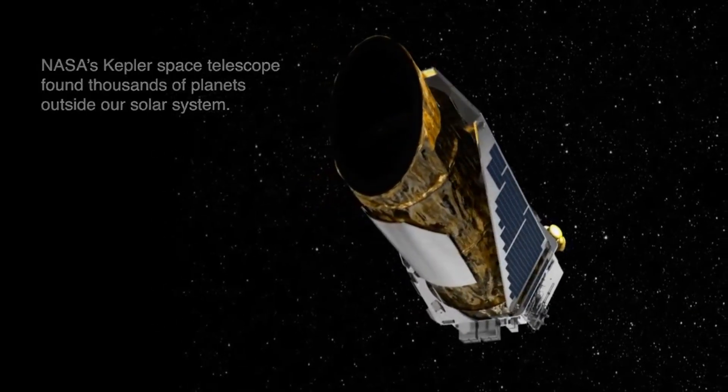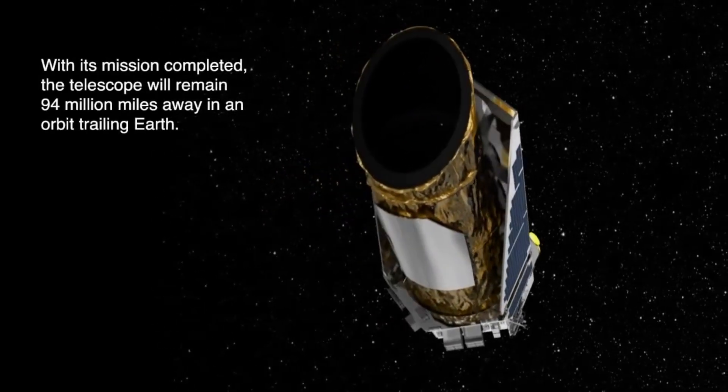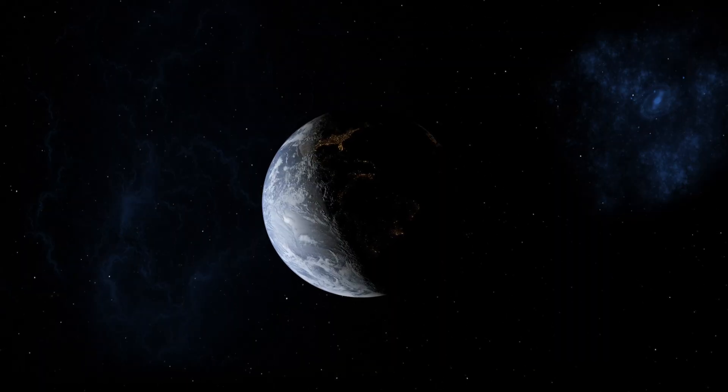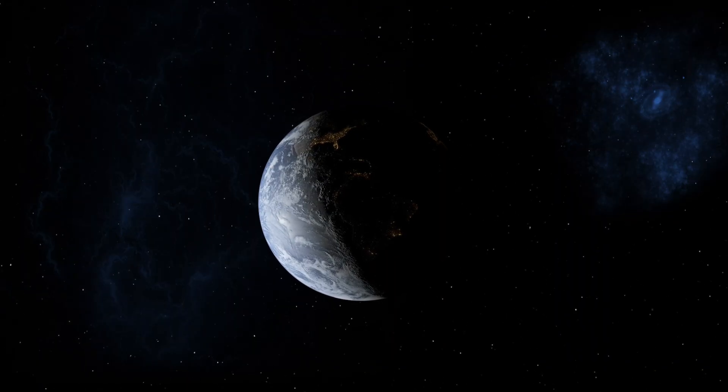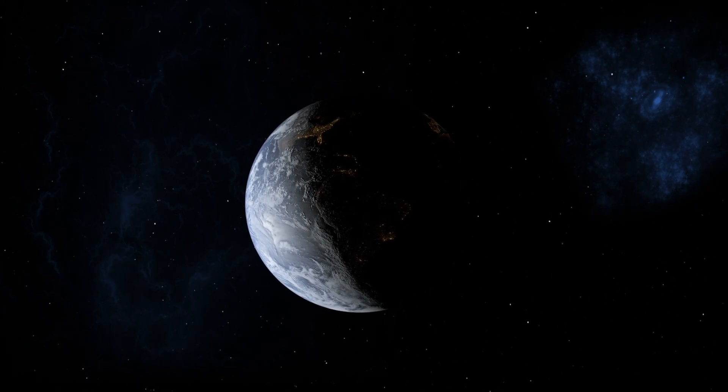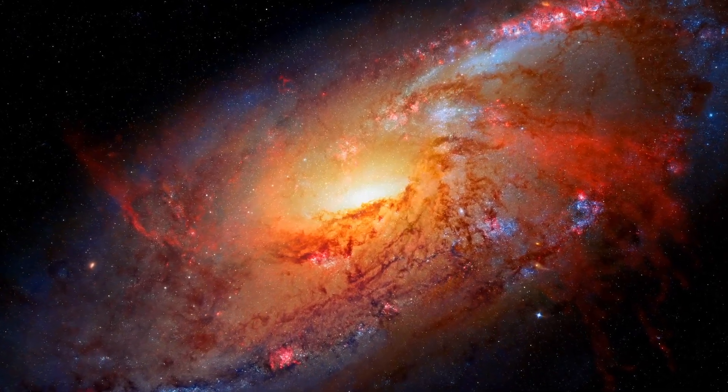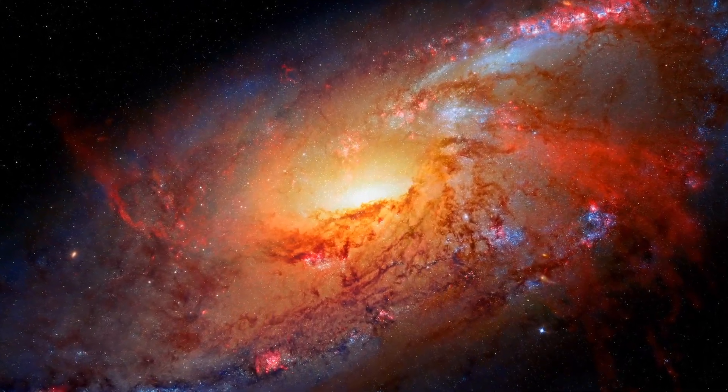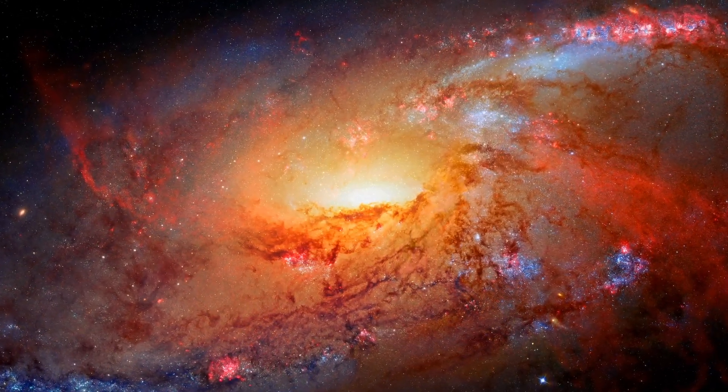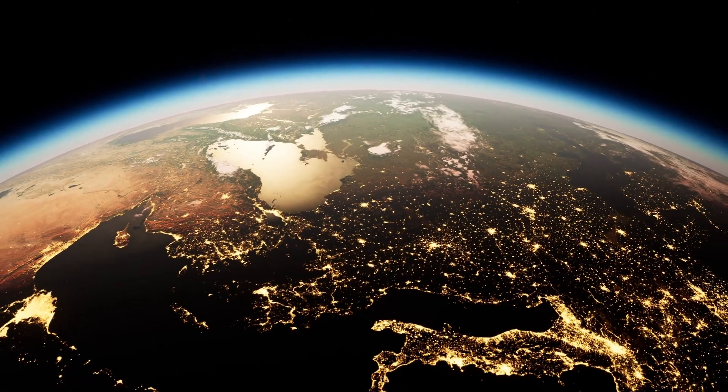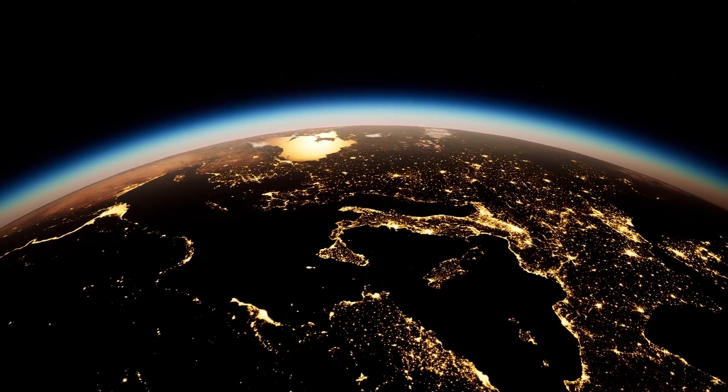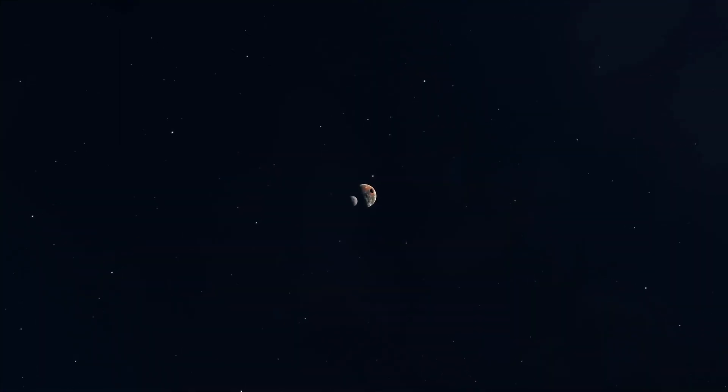You can only answer the questions for which you have the data, right? So we had to figure out what question we could answer given this new data that telescopes like the Kepler satellite had shown us. Here's the question we could answer: How bad does the probability per habitable zone planet have to be for forming a civilization in order for us to be the only time there's ever been a civilization? It turns out that number is one in ten billion trillion. So as long as nature's actual probability is bigger than one in ten billion trillion, we're not the first time it's happened.